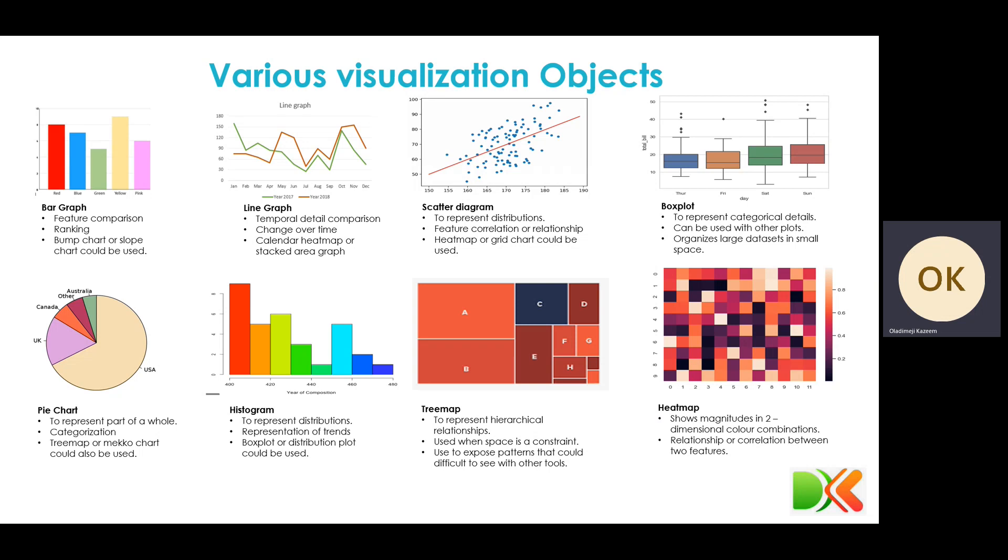Then the last one I have here is the heat map. This shows the relationship between two features using colors. The colors that is close to one extreme shows some relationship towards that extreme. And the colors that goes to the other extreme does the same thing. So depending on the situation, like if you look at this now, I have a variable here.